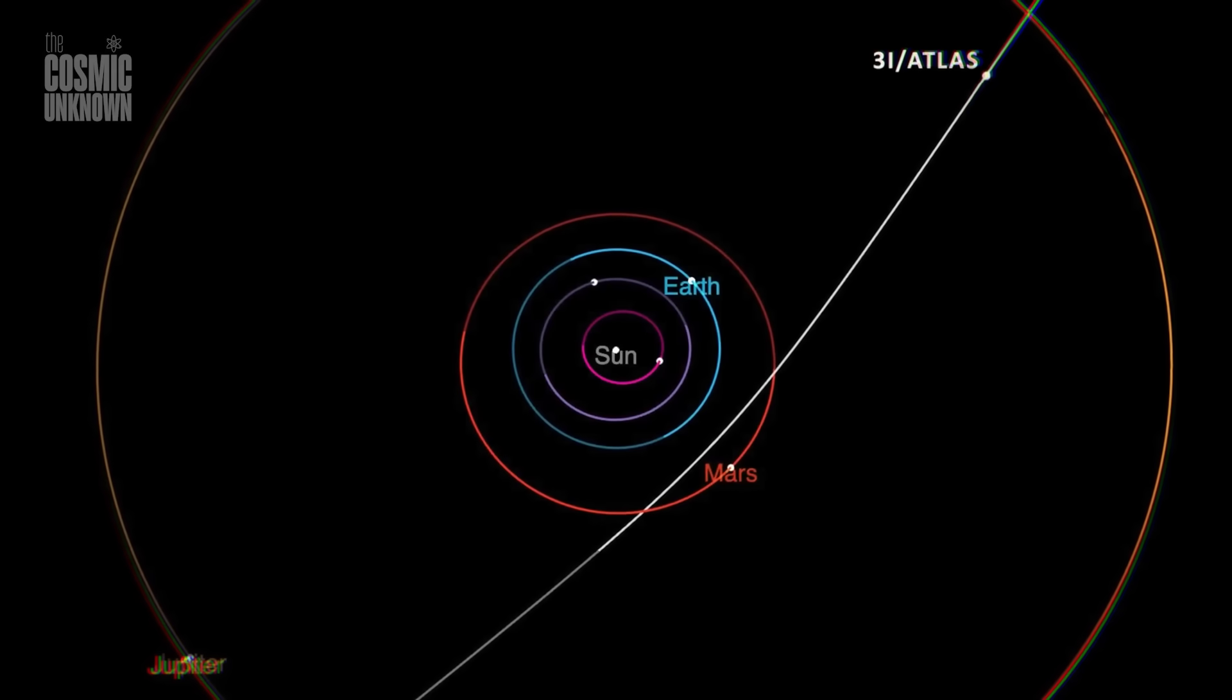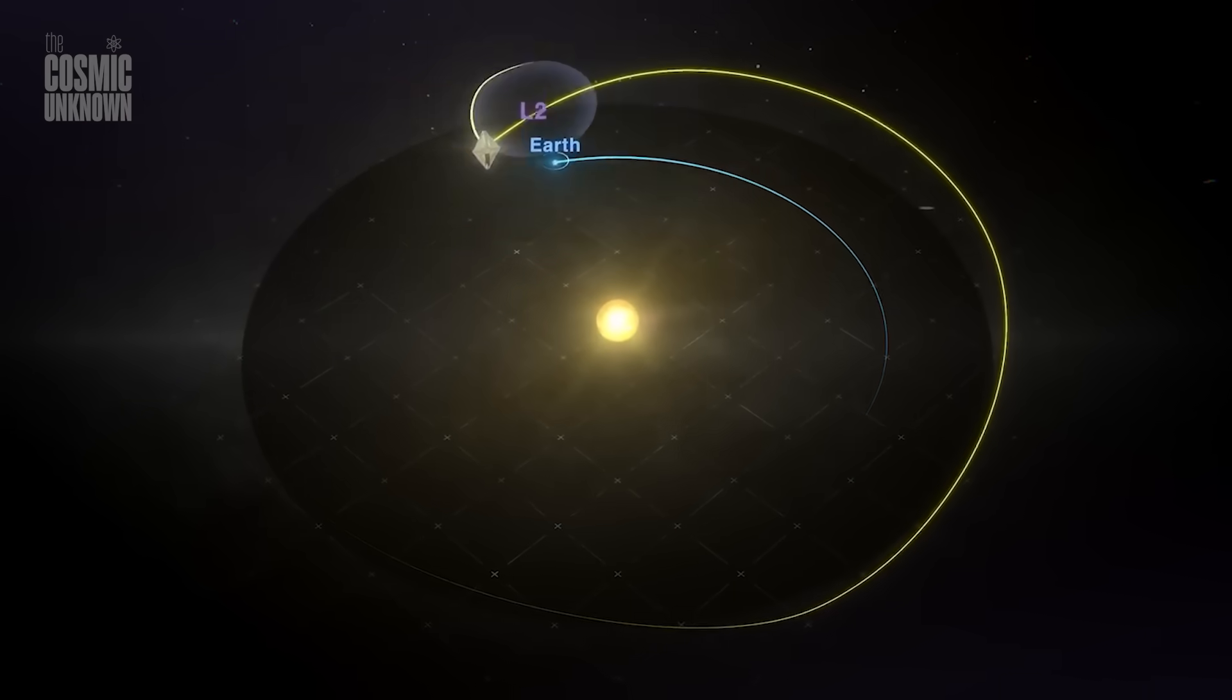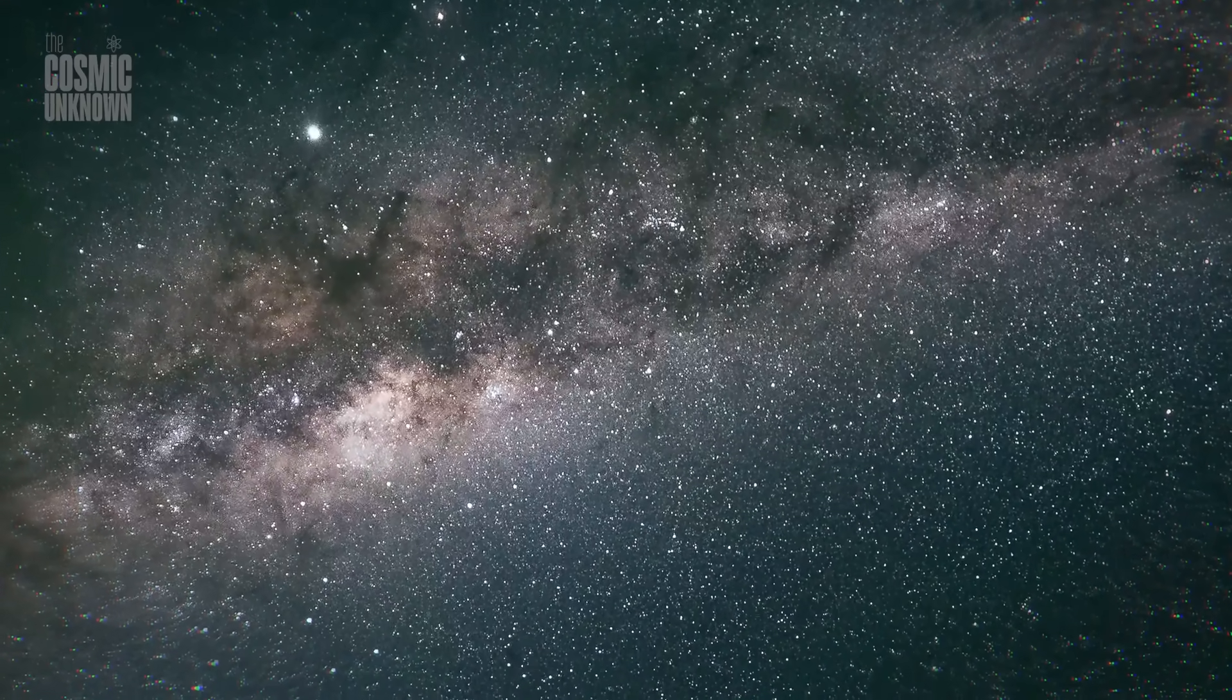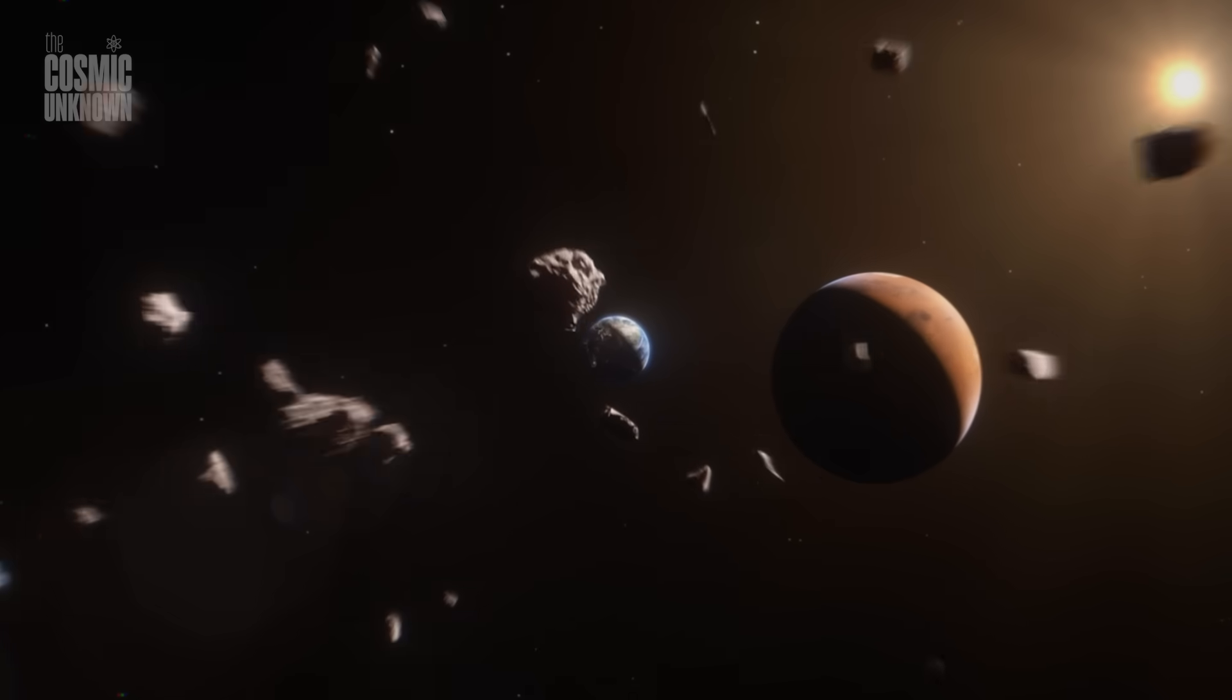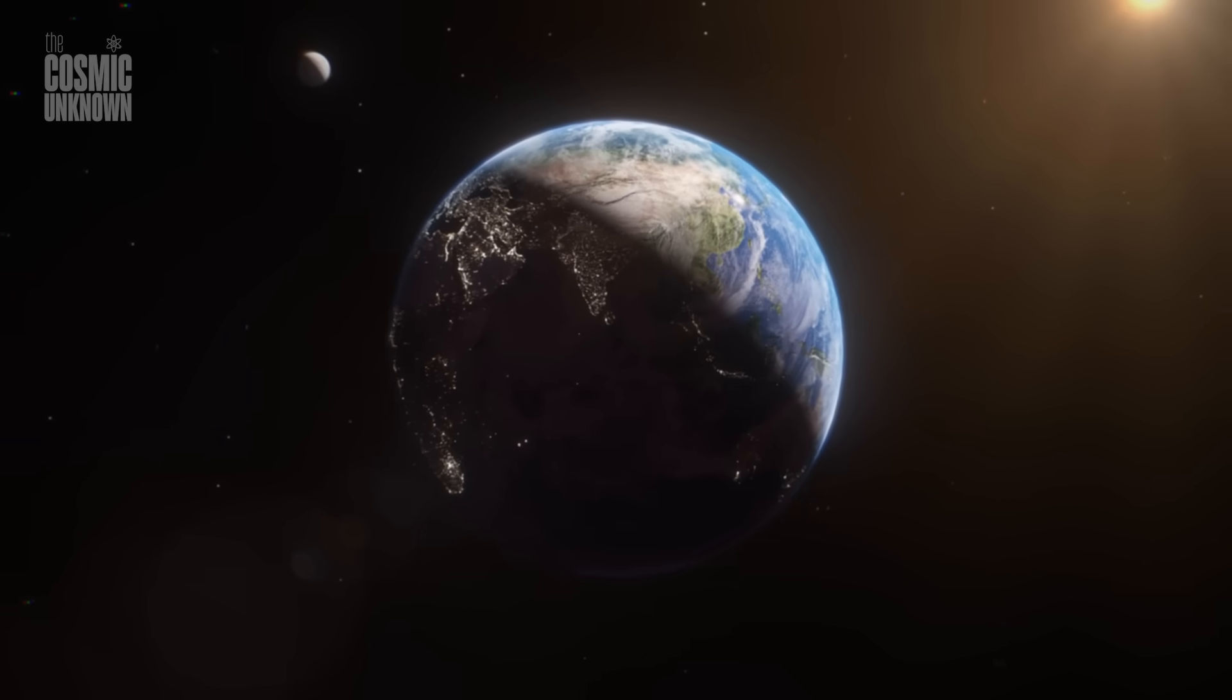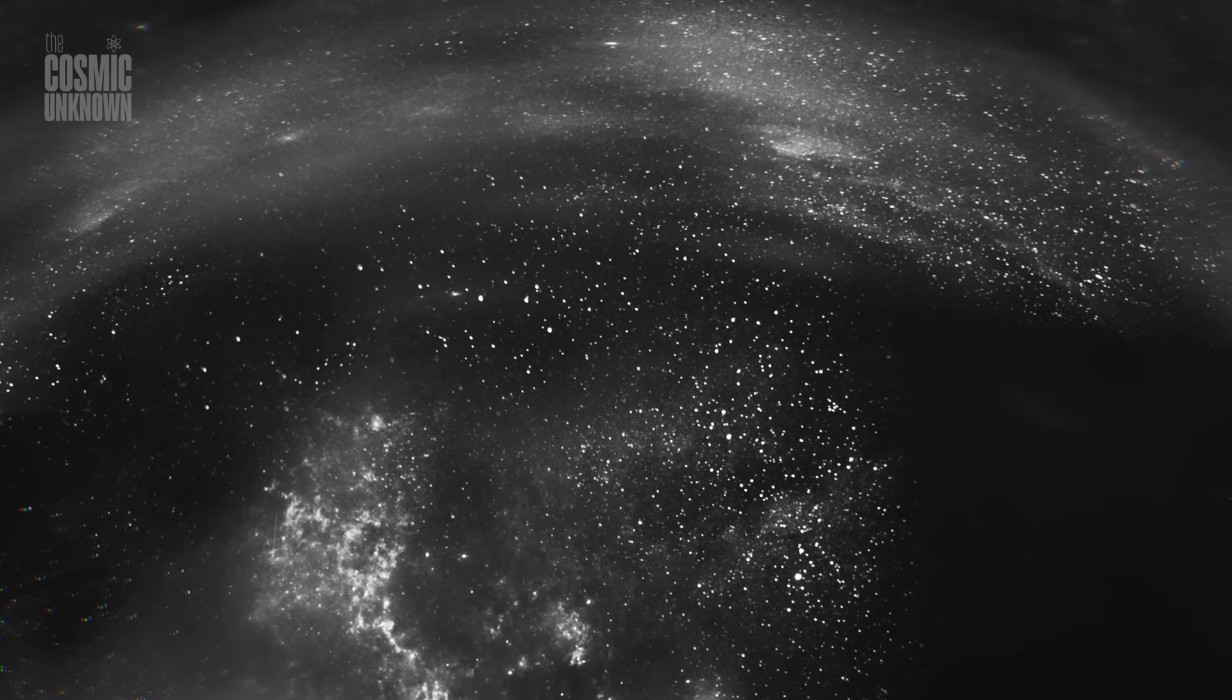3I Atlas won't stay long. In a few months it will pass behind the sun, recede into the outer system and eventually disappear from our view, another interstellar object recorded and archived but never truly understood. We'll have reams of data, spectral readings, orbital plots, high resolution images from the world's most advanced instruments, and still the essential question will remain unanswered. What exactly was it?